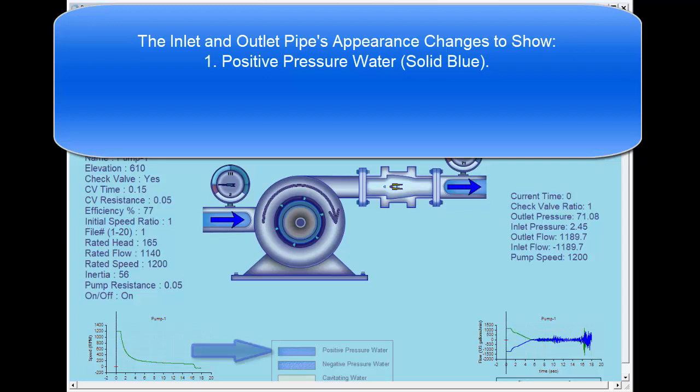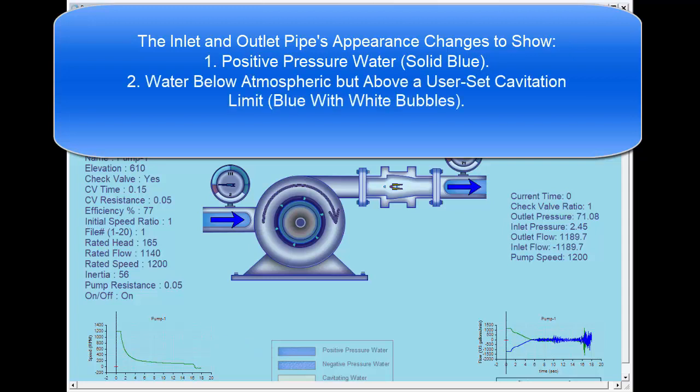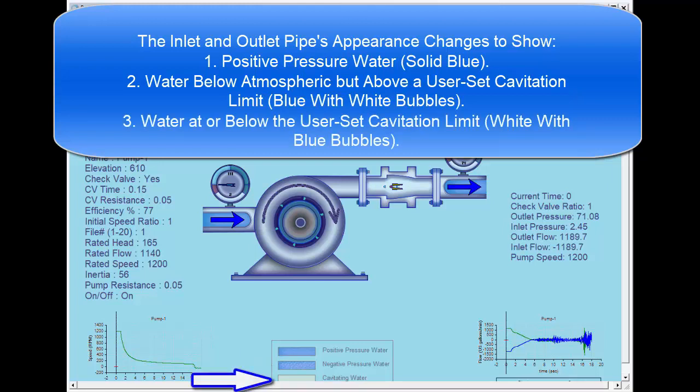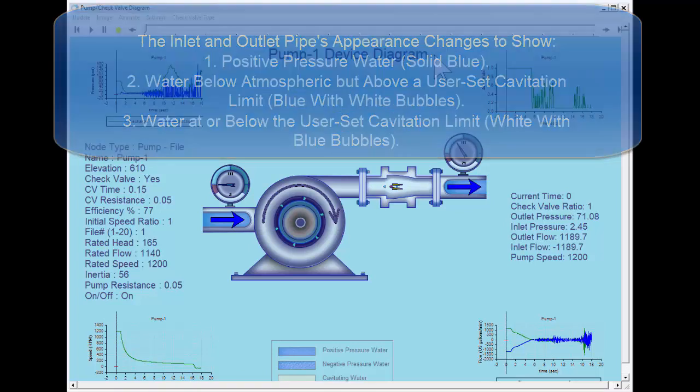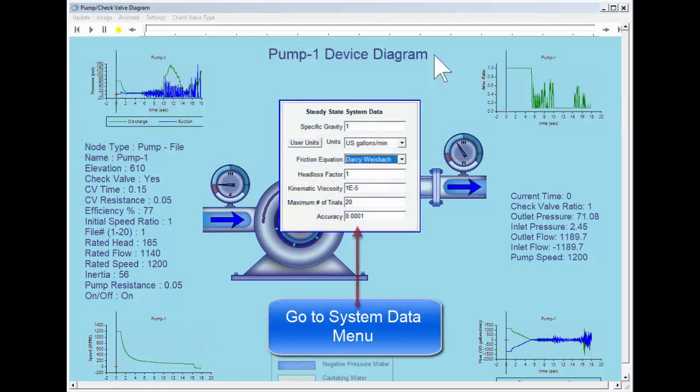Positive pressure water is shown as a medium blue. Water below atmospheric pressure is shown as a medium blue with white bubbles. And cavitating water is shown as white with blue bubbles. I'm using the term water, but users can define a different incompressible fluid as needed.